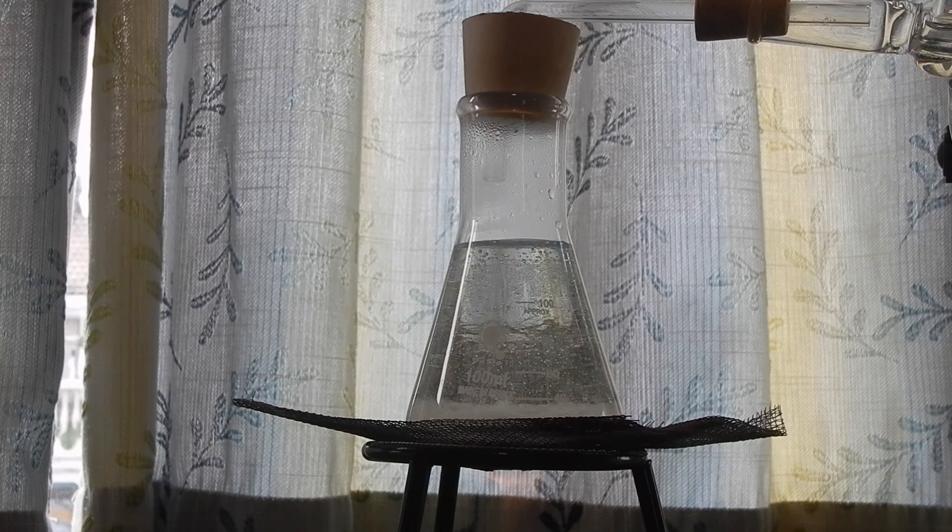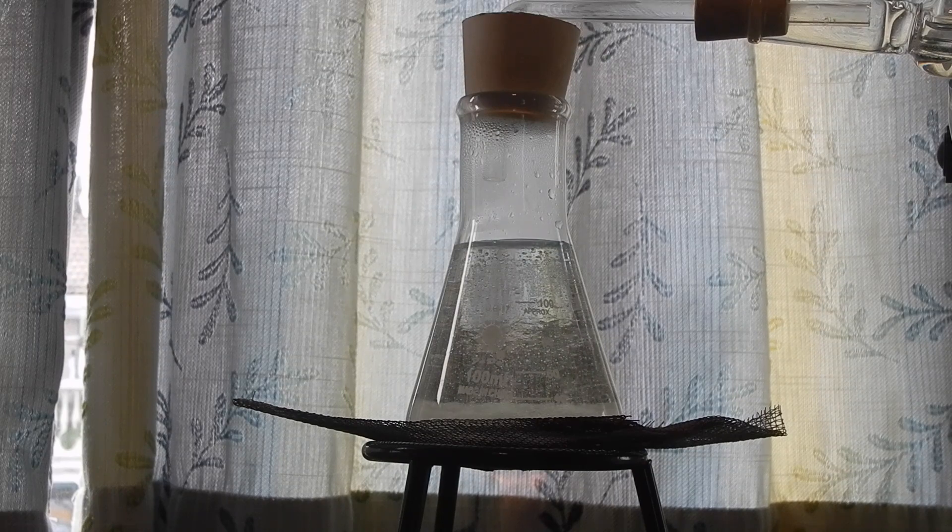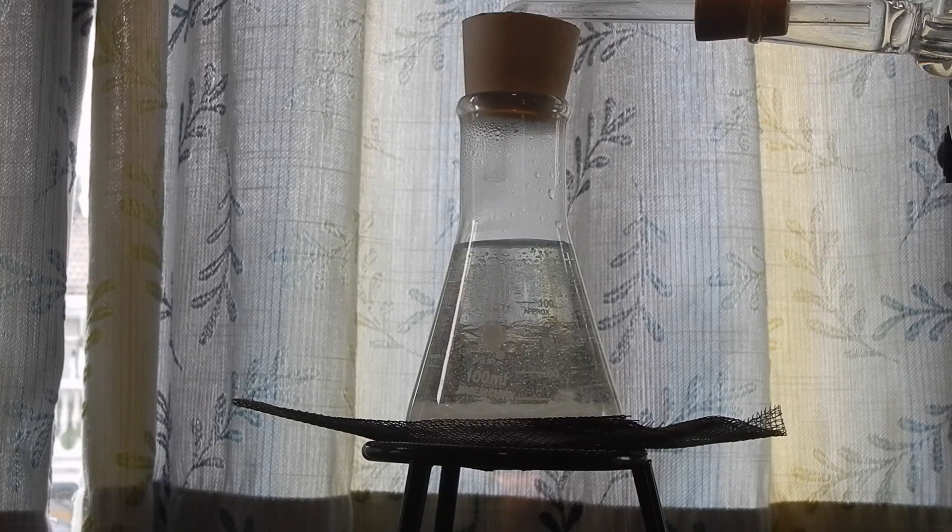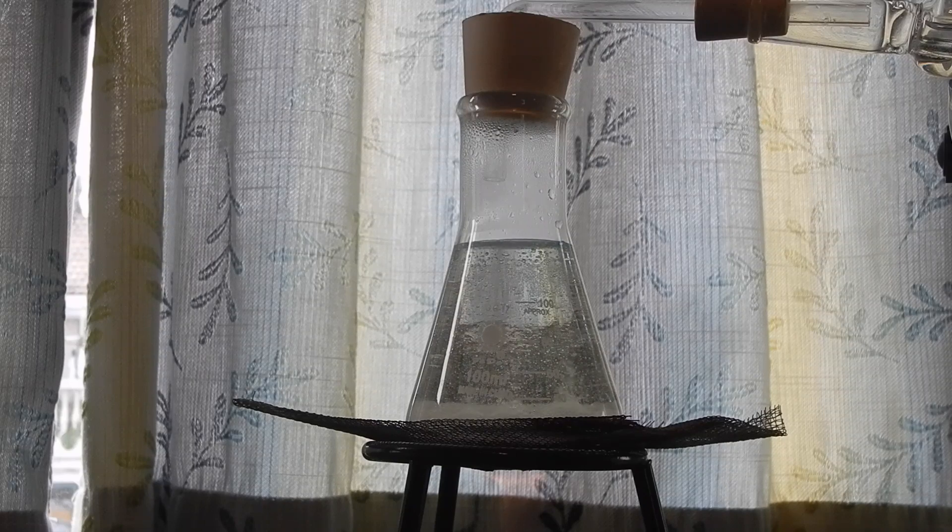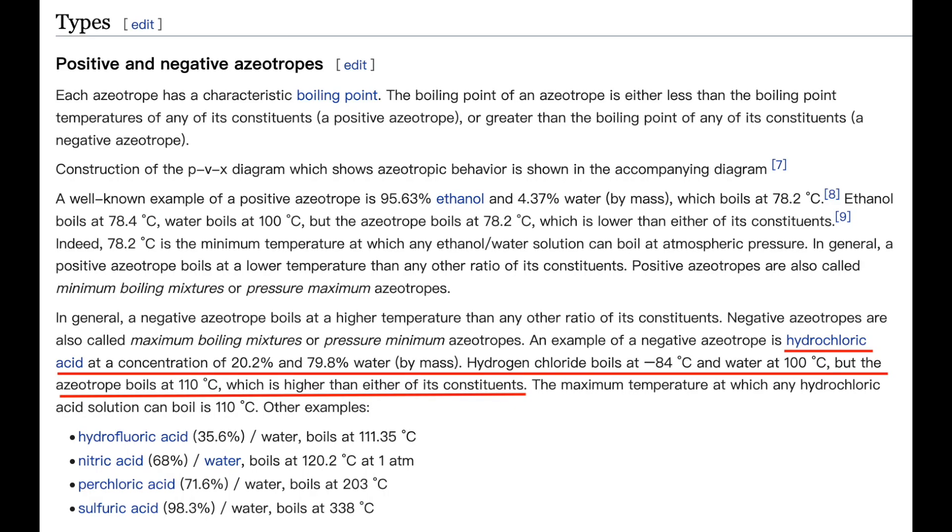Also, note that we added some water to the flask when we started. The water and the hydrogen chloride forms something called an azeotrope, which means that they boil at the same temperature. This makes it far easier to collect the acid produced, since hydrogen chloride is a gas at room temperature, but the azeotrope is liquid.